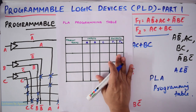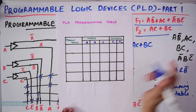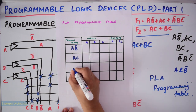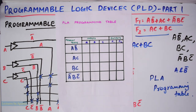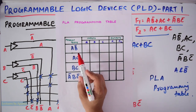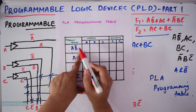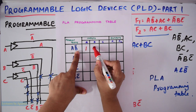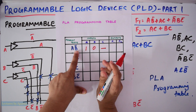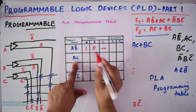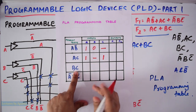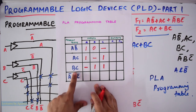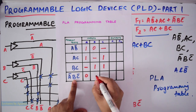In the first column, write all the product terms: AB̄, AC, BC, and ĀBC̄. In the second column, mark the values of each input that makes the product term. For AB̄: A=1, B=0, C=dash (C is not present). For AC: A=1, B=dash, C=1. For BC: B=1, C=1, A=dash. For ĀBC̄: A=0, B=1, C=0.